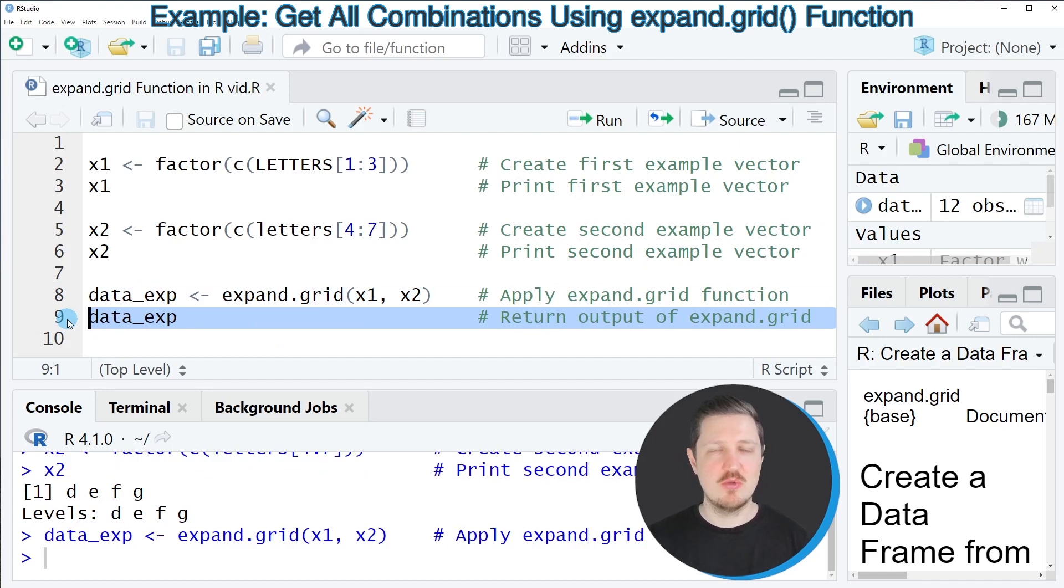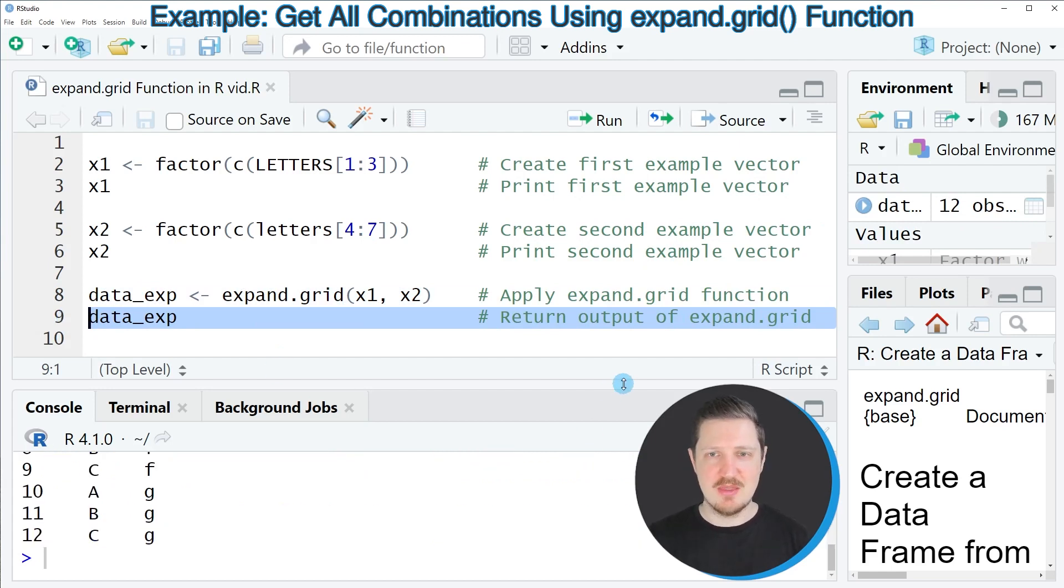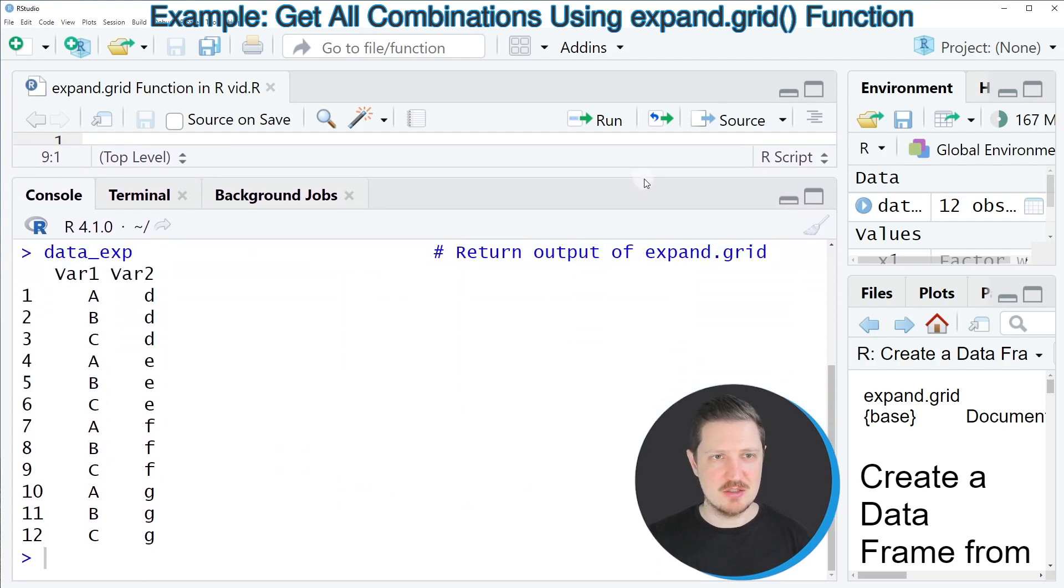And we can print this data object to the bottom in the RStudio console by running line 9 of the code. Then you can see that we have created a new data set which contains 12 rows and the two columns var1 and var2. And as you can see, each row of this data set is a different combination of our two vector objects x1 and x2.